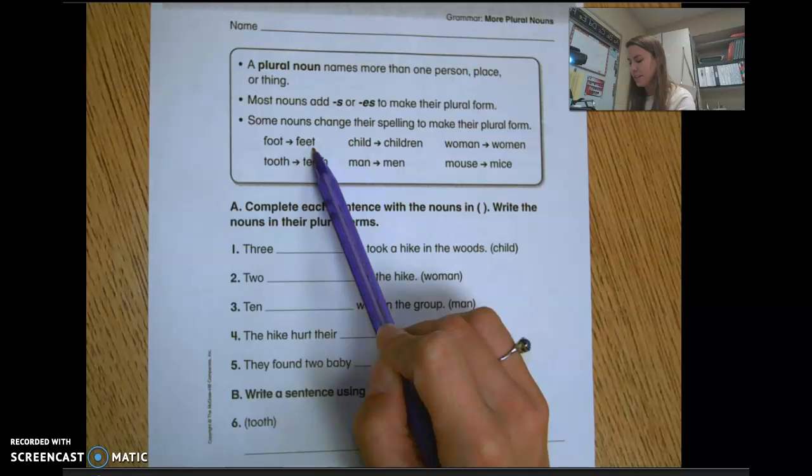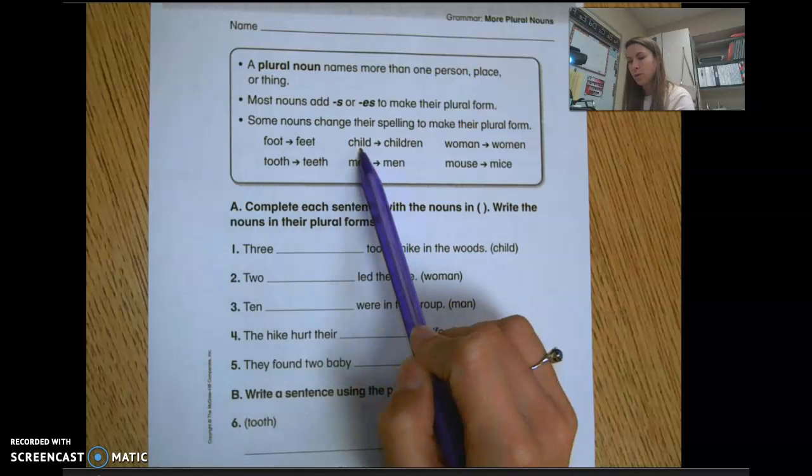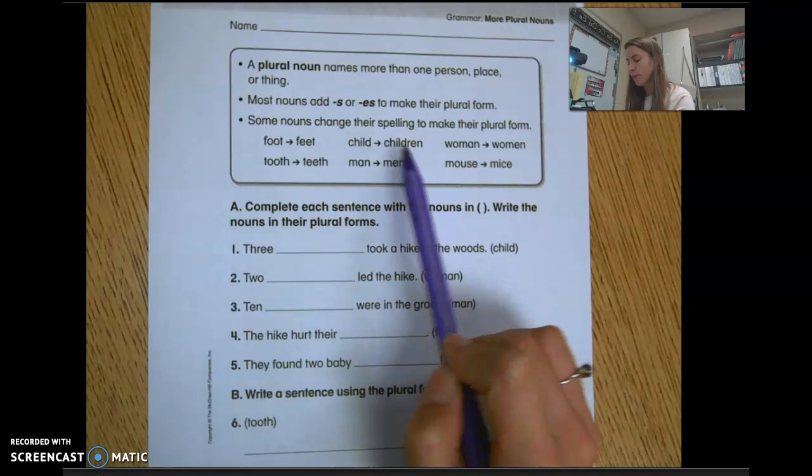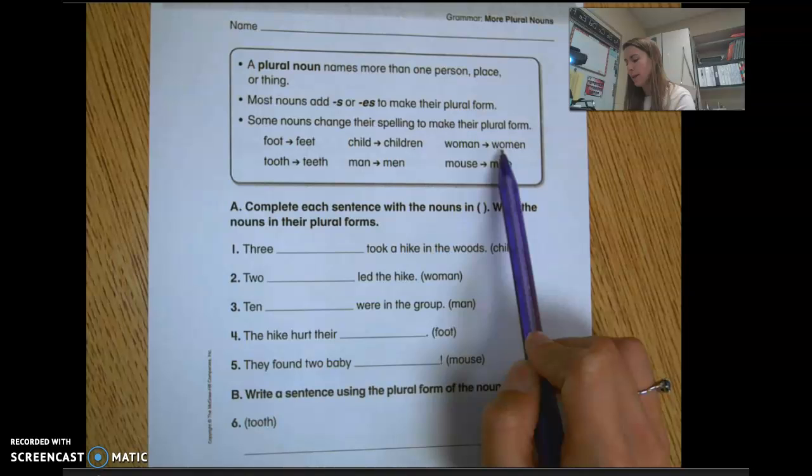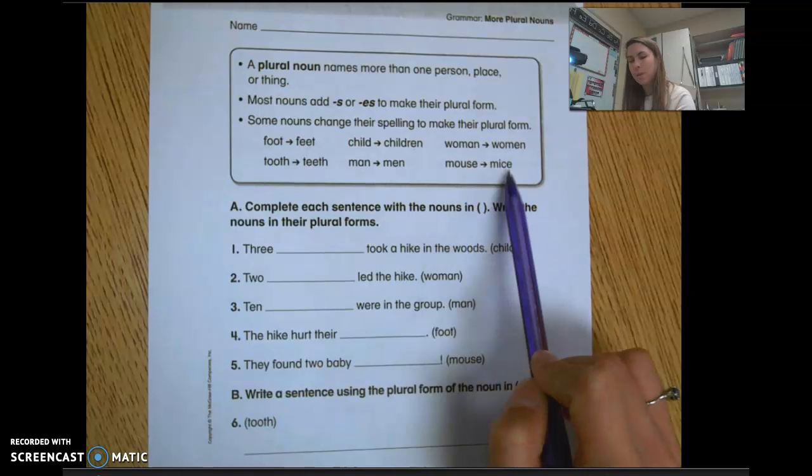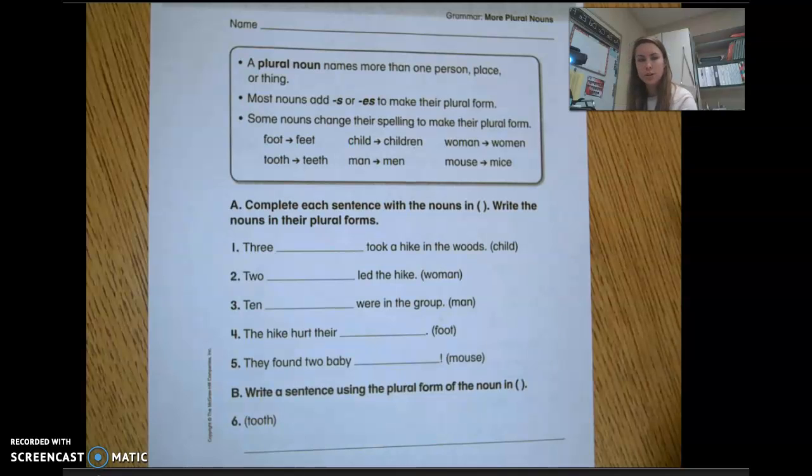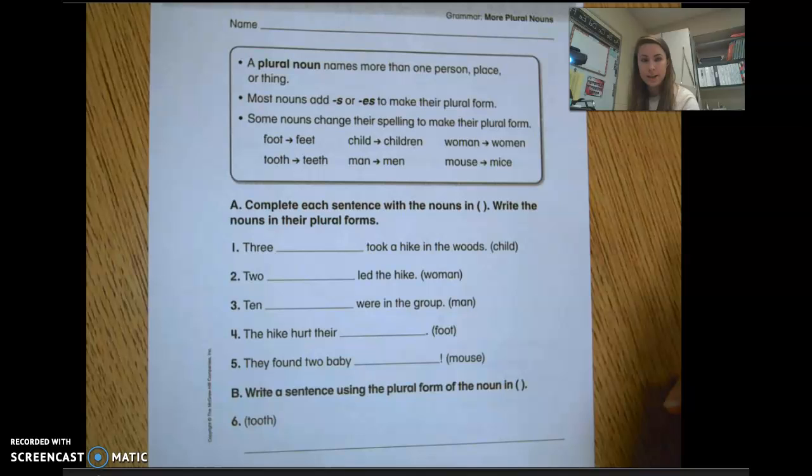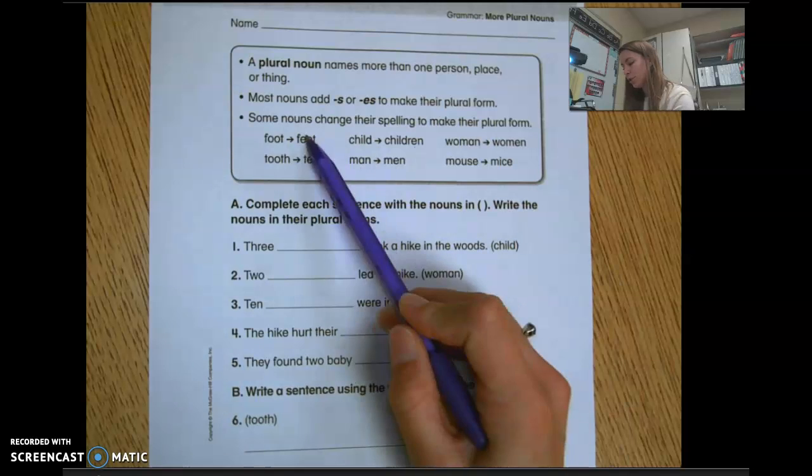Most nouns add s or es to make their plural form. Some nouns change their spelling to make their plural form, like foot - if I want to say more than one foot, I say feet. More than one tooth is teeth, one child is children, one man is men, one woman is women, one mouse is mice. So all these words change their spelling. They don't add an s or es or change the y to an i and add es.